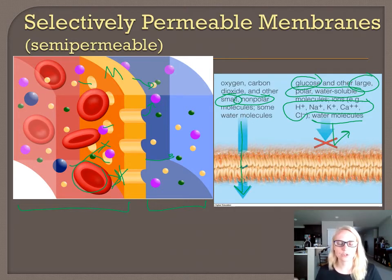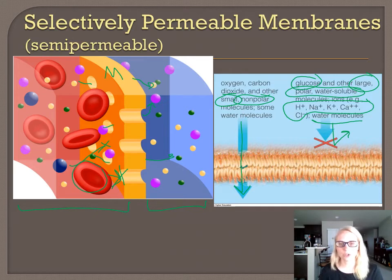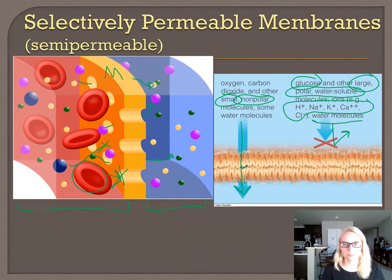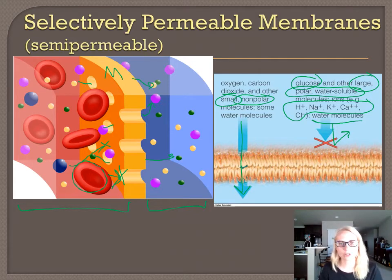We're going to call that help facilitated diffusion a little bit later. This slide illustrates the concept of selective permeability. The phospholipid bilayer is selectively permeable based on the characteristics of the substances. If you're small and nonpolar, hydrophobic, or lipid soluble, you can go directly through the plasma membrane. If you are large, charged, polar, or water-soluble, you cannot go directly through — you're going to need one of those transport channels to enter or leave the cell.